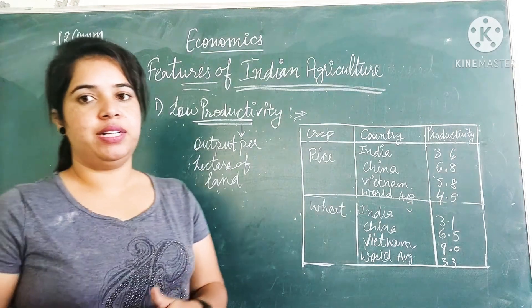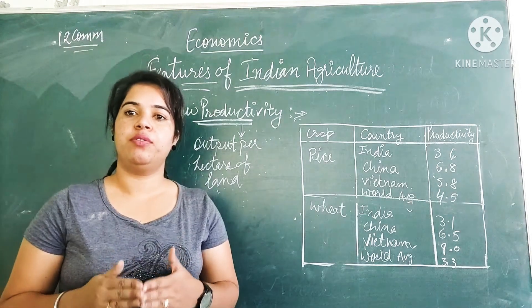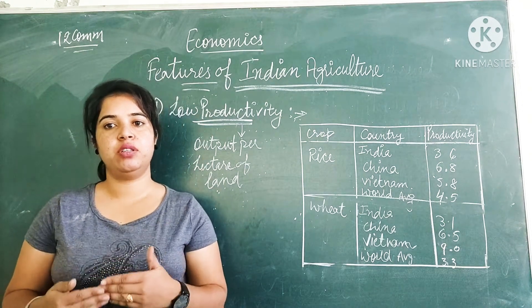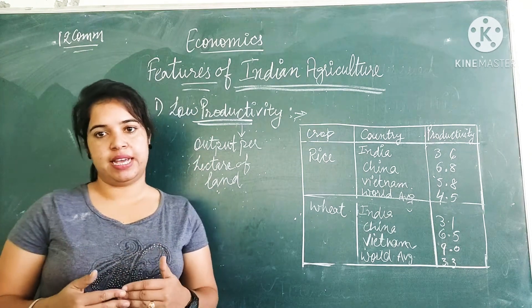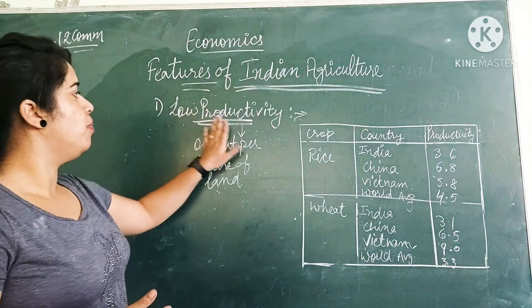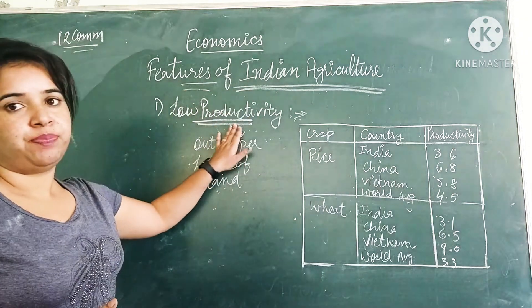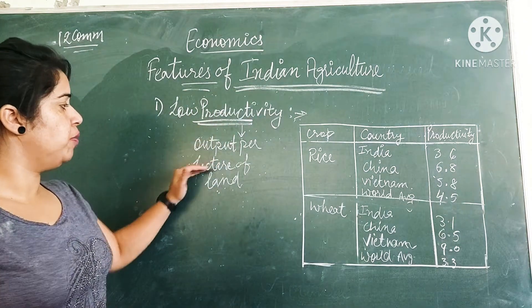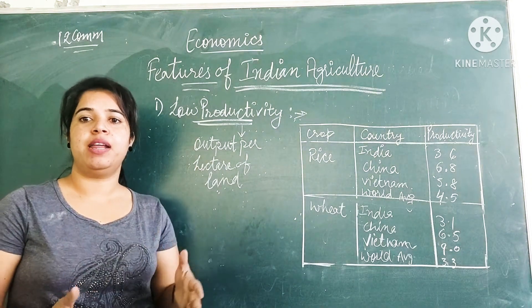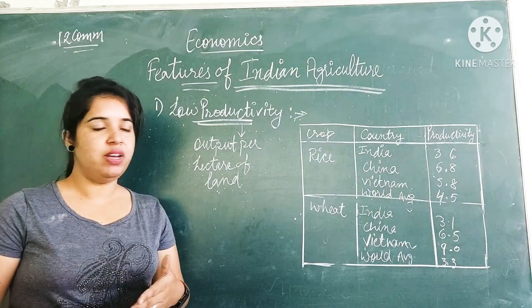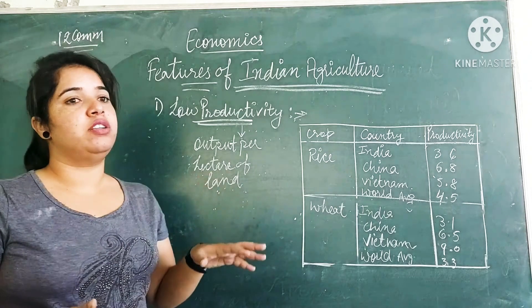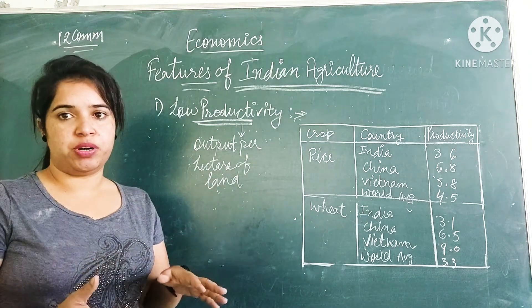Till now we have studied the importance of agriculture. Now we are going to study the features of Indian agriculture. The first feature is low productivity. Productivity means output per hectare of land, and Indian agriculture has low productivity.